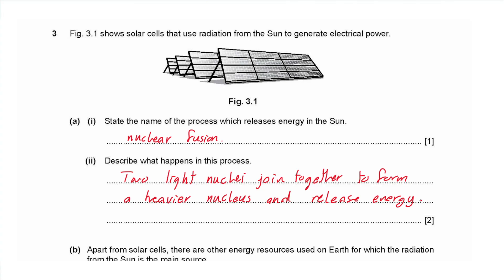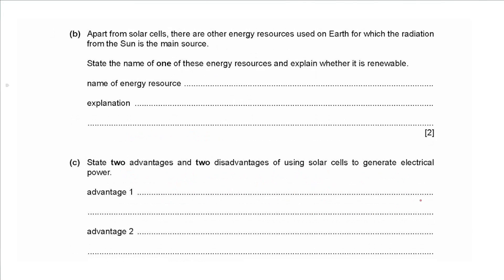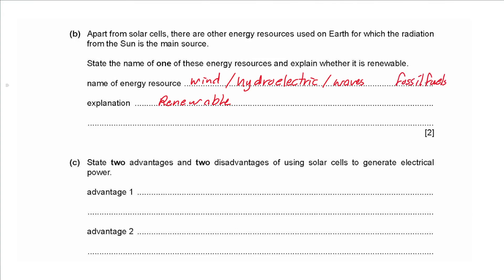For an extra mark, there is a loss in mass in the reaction and the lost mass is converted to energy. Part b: apart from solar cells, name one energy resource for which radiation from the sun is the main source and explain whether it is renewable. Wind energy, hydroelectric, or waves — these depend on the sun and are renewable. Fossil fuels depend on the sun but are non-renewable. Note: tidal energy depends on the moon, and nuclear fission depends on energy stored in atoms, not the sun.